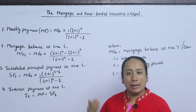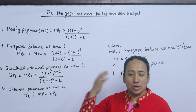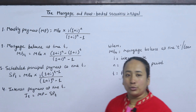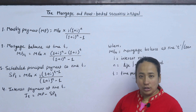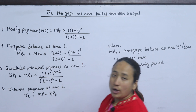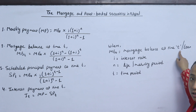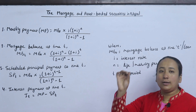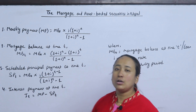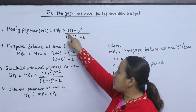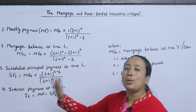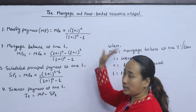In this chapter, we will discuss the amortized loan on a monthly basis. We will talk about how much interest and how much principal is involved each month. The monthly payment is a fixed monthly instrument. MB0 is called the mortgage balance at time 0, which is the loan or borrowed amount. The interest rate is denoted as i, and 1 plus i to the power n represents the time period. In the monthly calculation, we compute 1 plus i to the power n minus 1.